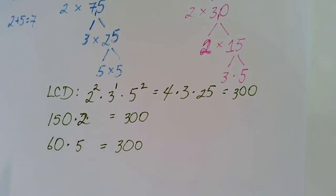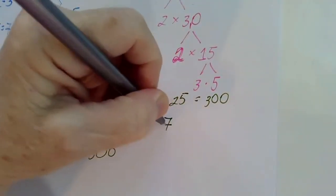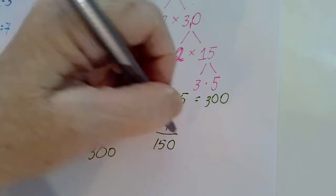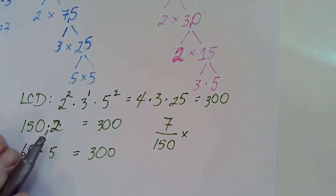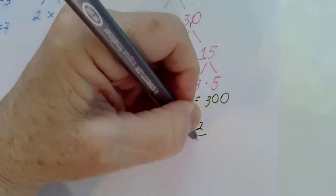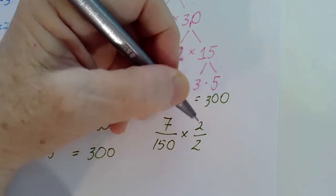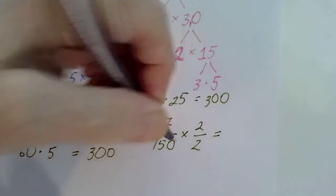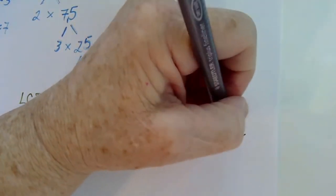And this tells us how to find the equivalent fractions. The first fraction was seven over one hundred fifty. We saw that one hundred fifty times two was three hundred. So I can multiply by anything I want as long as I do the same thing in the numerator and denominator. So I'm going to multiply by two over two because of this two. We get fourteen over three hundred.